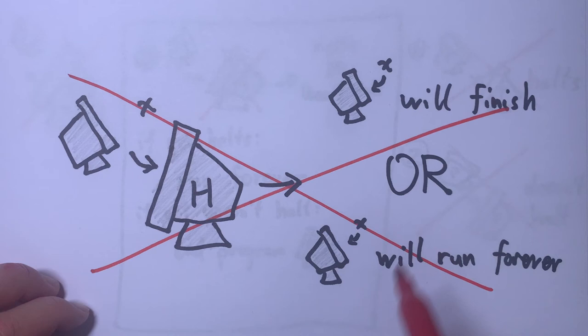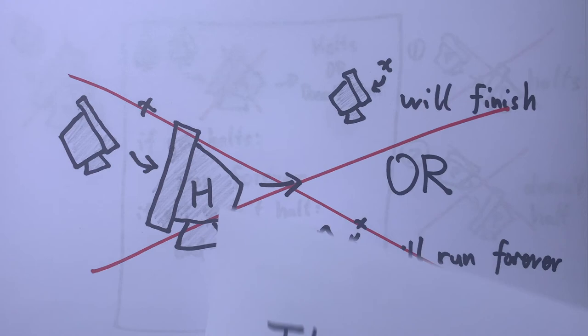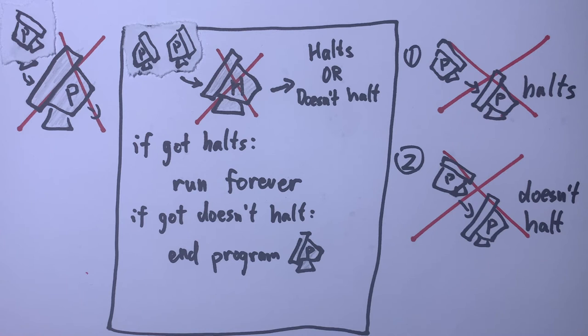You might have noticed that this proof is really similar to the liar paradox. However, it is not itself a paradox, but instead a proof by contradiction. Additionally, unlike the liar paradox, it can be written in rigorous mathematical language, not just English.